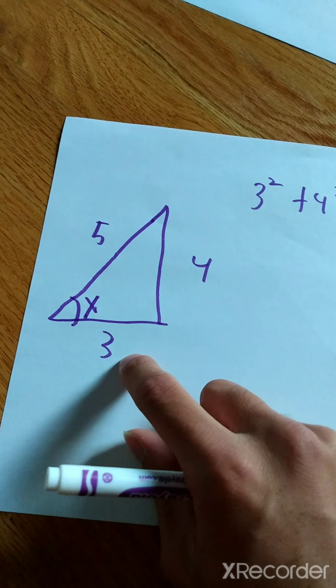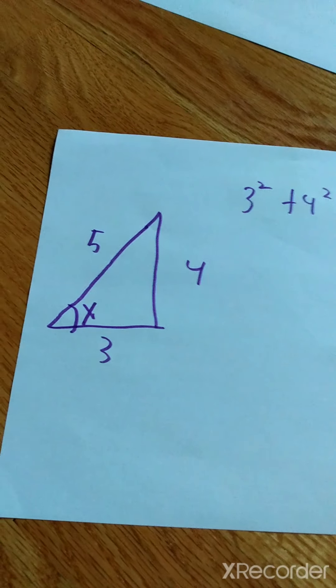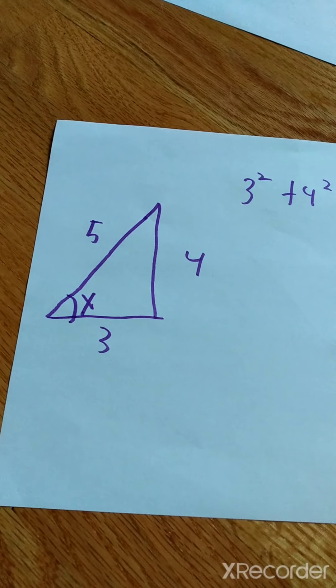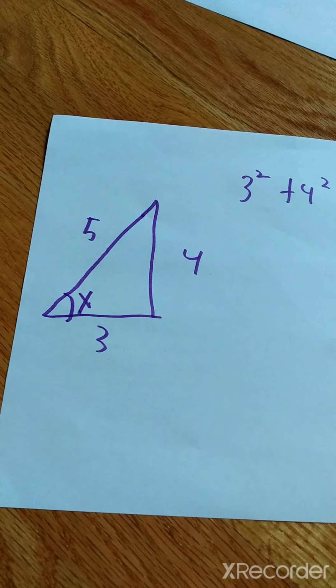And the combination with 5, 4, and 3 is actually the most famous combination for Pythagorean Theorem. There are many other combinations, but this is the most famous one.